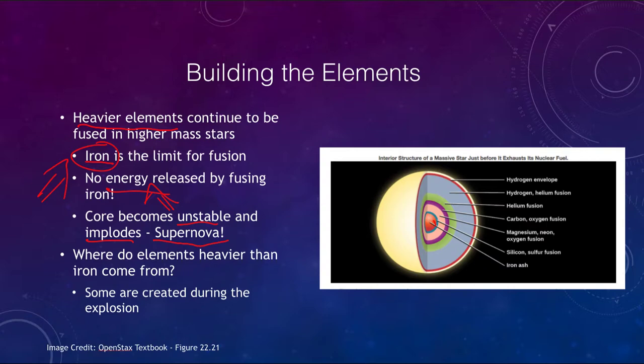We've produced elements up to iron. How do we get heavier than iron? Iron is element number 26 in the periodic table, and we know that there are 92 naturally occurring elements. Where do the rest of them come from? It is believed that some of them could be created during the supernova explosion itself. During the massive energy of the explosion, heavier elements could be fused together. It's also believed that sometimes in the collision of neutron stars heavier elements could be created.